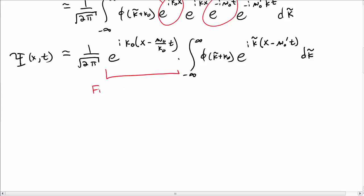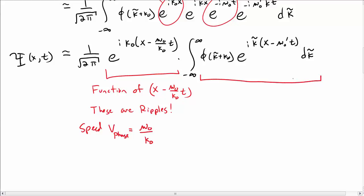This term out front is just a function of x minus omega_0 over k0 times t. And so we would interpret this as the ripples making up our wave packet. And these ripples travel at a speed of the phase velocity, which is just omega_0 over k0.